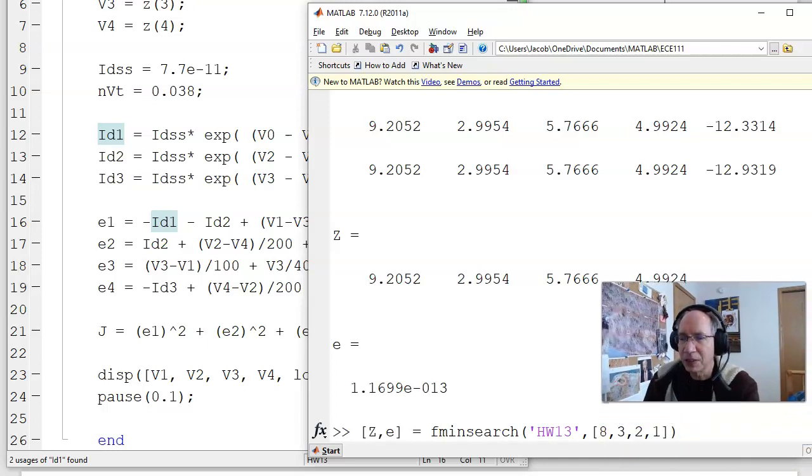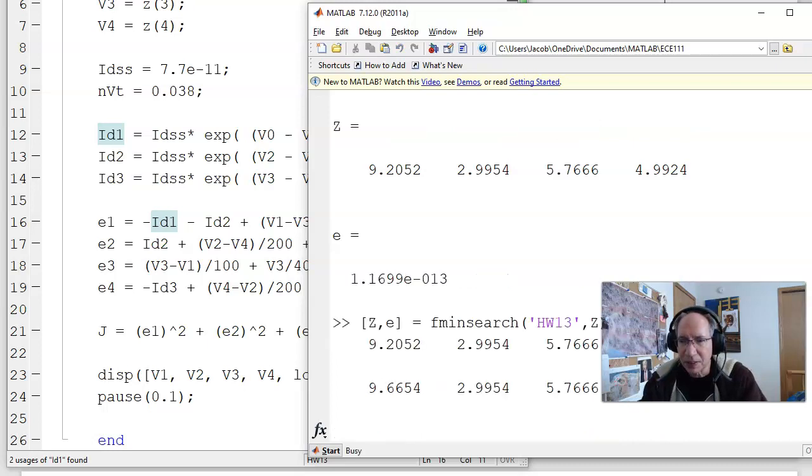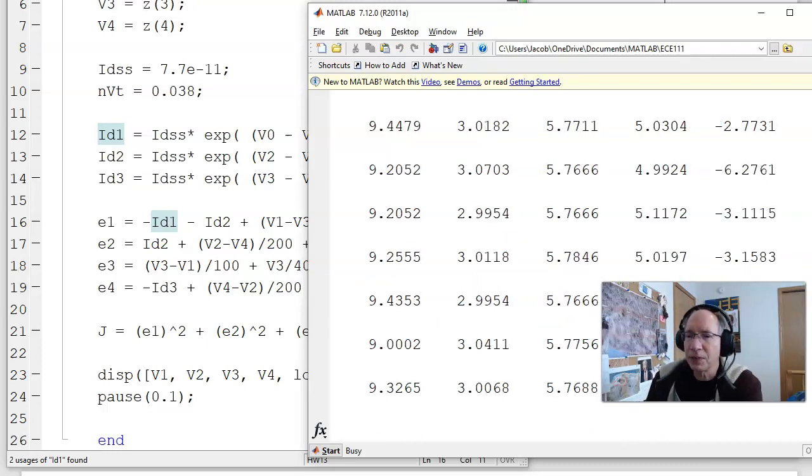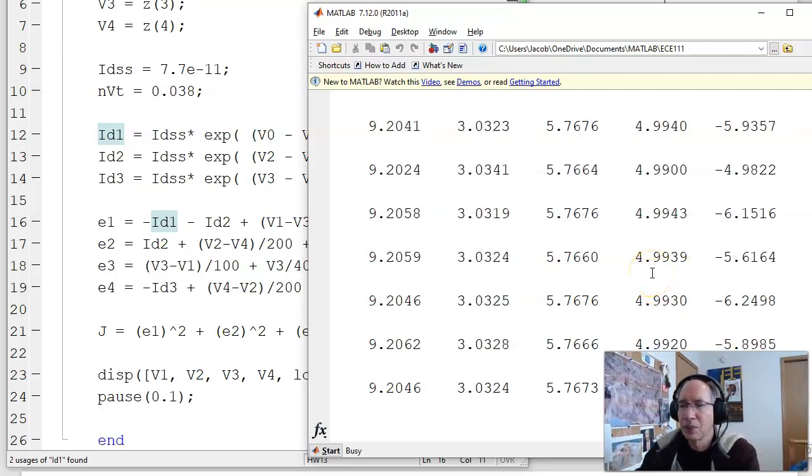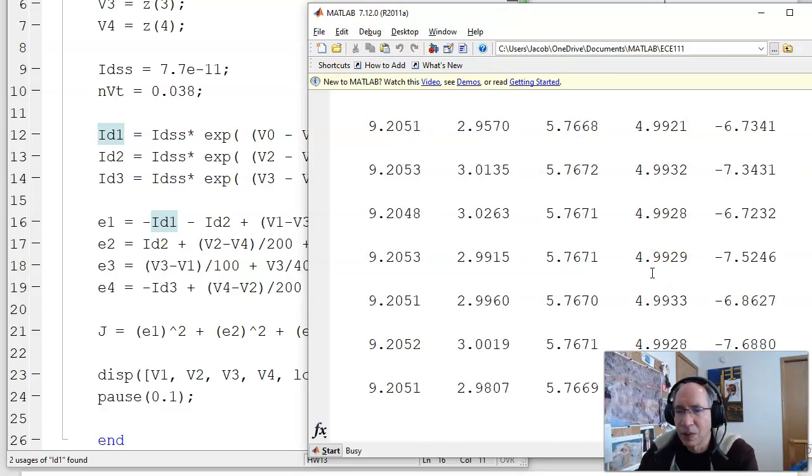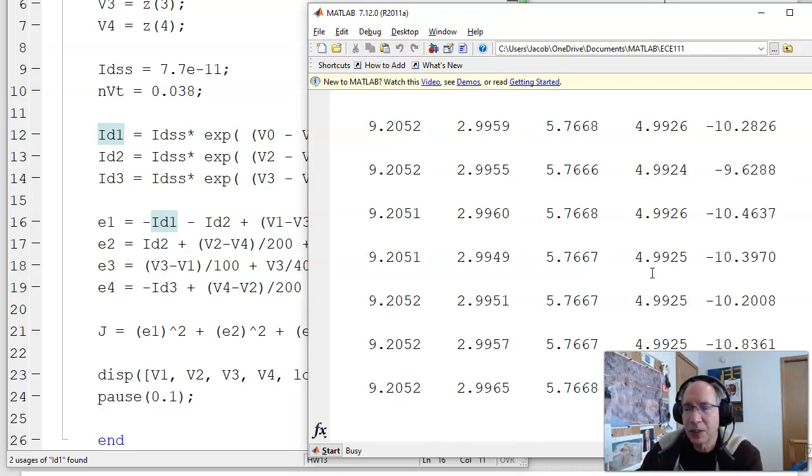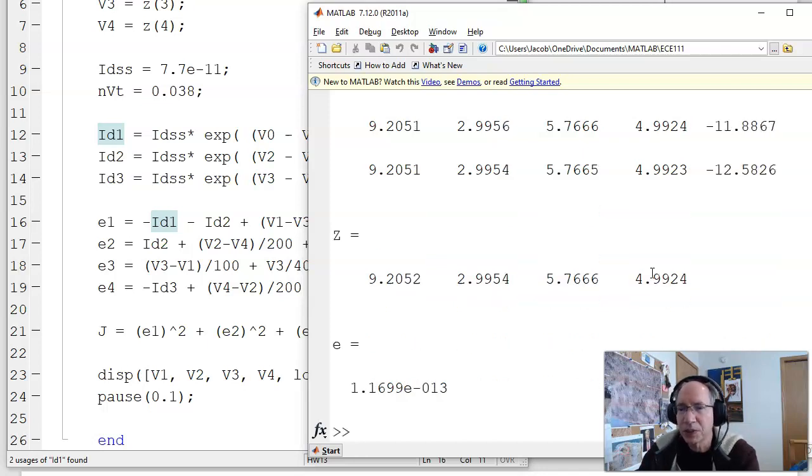So what I can do is I'm going to pass to it the result of the previous guess. Picking up where you left off, can I do better? When an fminSearch kicks out, it's either because it found the solution or it just hit the maximum number of iterations. I don't really know which one it was. But that's pretty much the same answer. Error is 10 to the minus 13. That's probably the voltages.